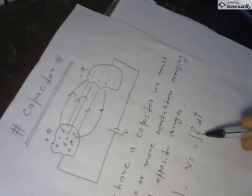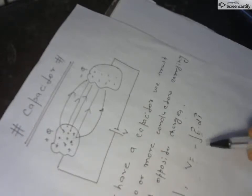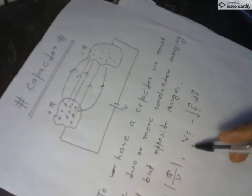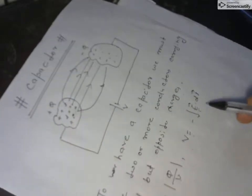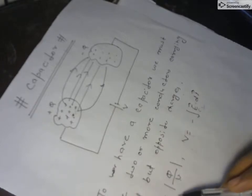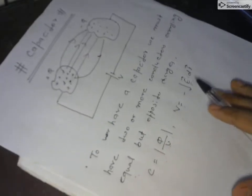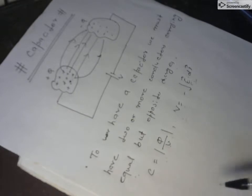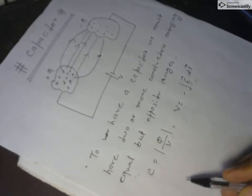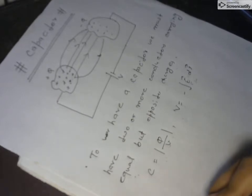So if we calculate the electric field between the conductors, then by using this formula we can calculate the potential difference, and from the potential difference we calculate the capacitance of the capacitor. This is the method to calculate the capacitance.